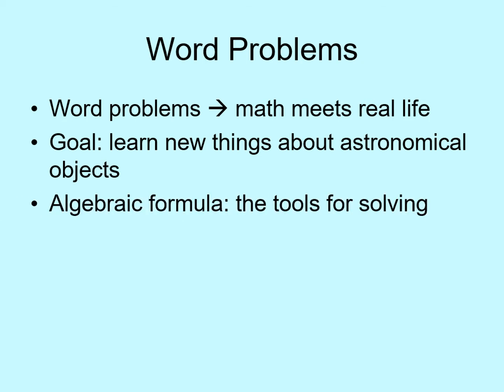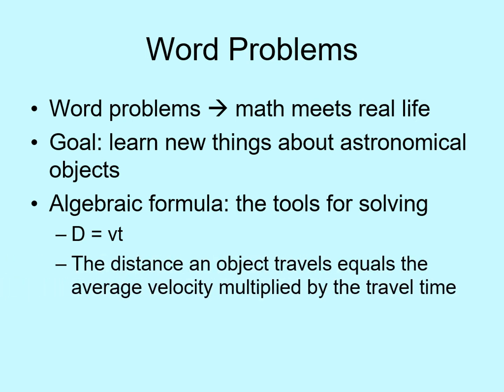The key here is something called an algebraic formula. A formula is just a shorthand way of saying how one quantity relates to another. Here's an example: D equals VT. That means the distance an object travels equals the average velocity multiplied by the travel time. Both of these say exactly the same thing.